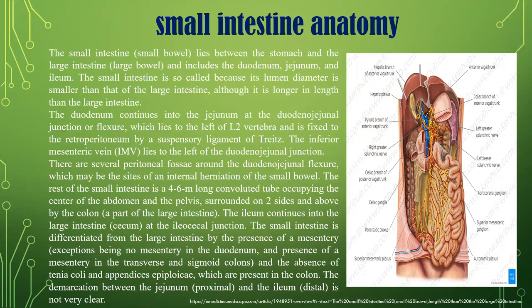The duodenum continues at the duodenal junction or flexure, which lies to the left of the second lumbar vertebra and is fixed to the retroperitoneum by the suspensory ligament of Treitz. The inferior mesenteric vein lies to the left of the duodenal junction. There are several peritoneal fossae around the duodenal junctional flexure, which may be the site of an internal herniation of the small bowel. The rest of the small intestine is a four to six meter long convoluted tube occupying the center of the abdomen and pelvis. The ileum continues into the large intestine at the ileocecal junction. The small intestine is differentiated from the large one by the presence of mesentery and the absence of taenia coli and appendices epiploicae.